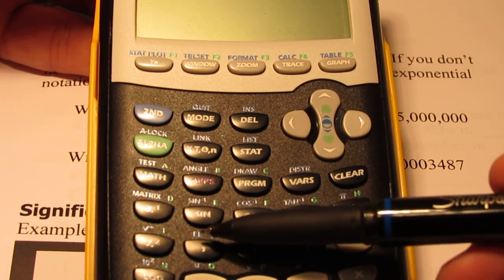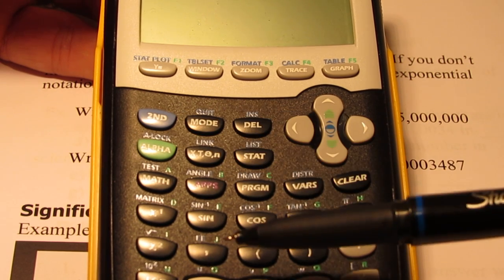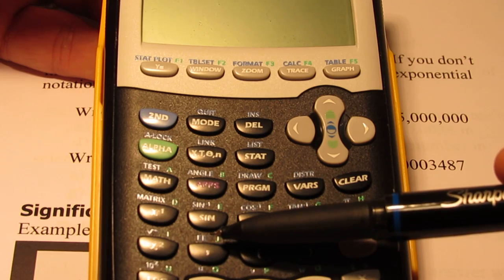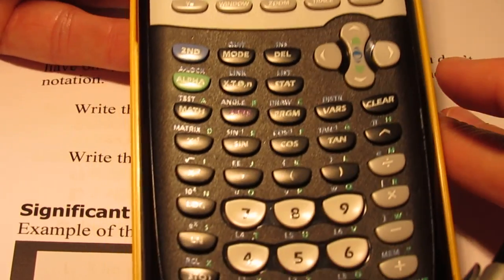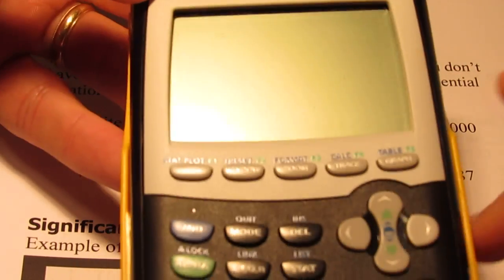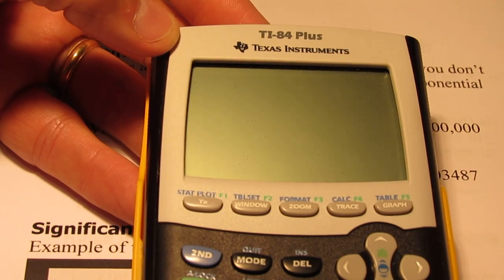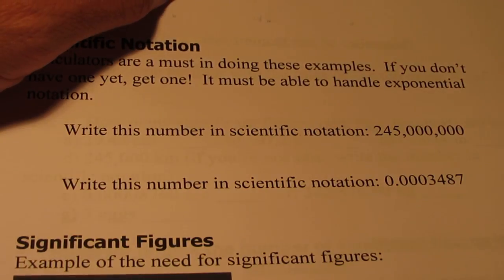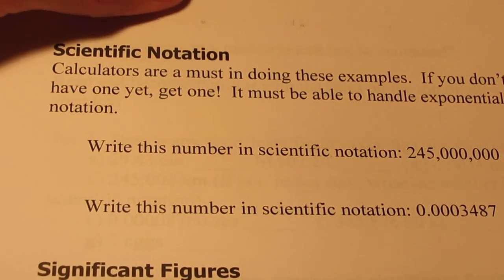And then there's also an EE button. Now that's a second function button. So if I go second function and this comma, you can see the double E and that means times ten to some power. So we'll be using that later on in this discussion. Once again, you don't have one this nice. You can just get an inexpensive scientific calculator which you'll see me use and even cheaper ones throughout the year on the video presentation.